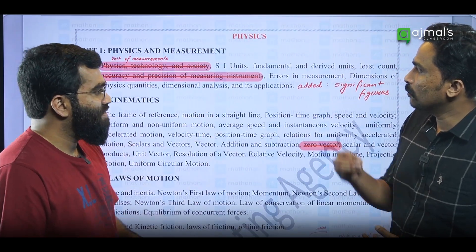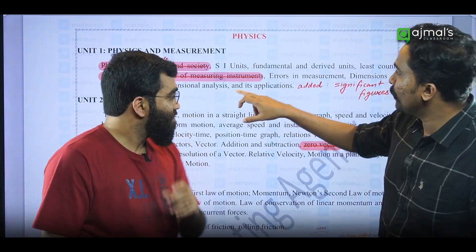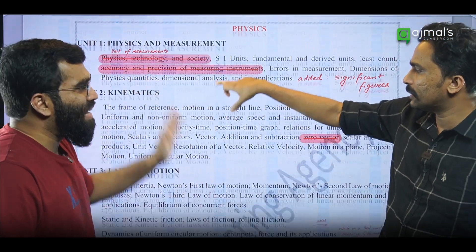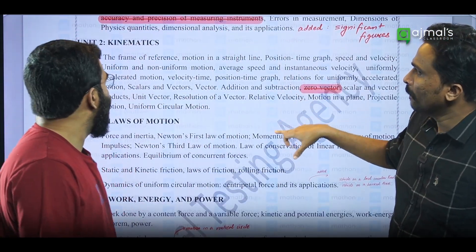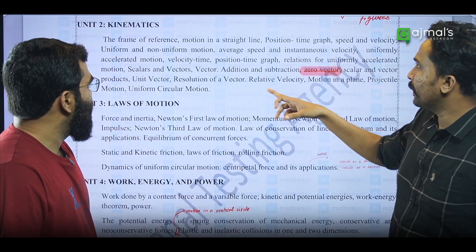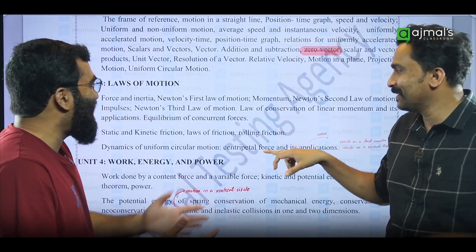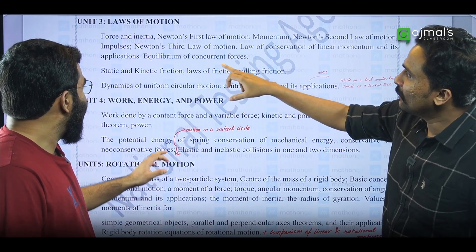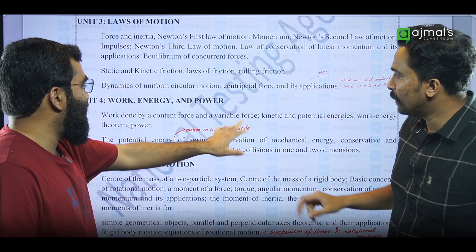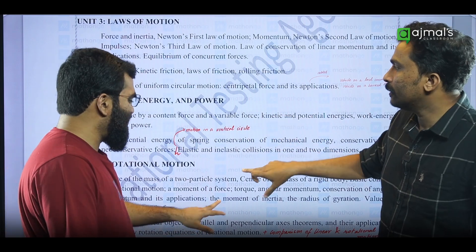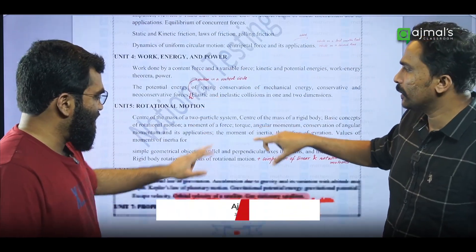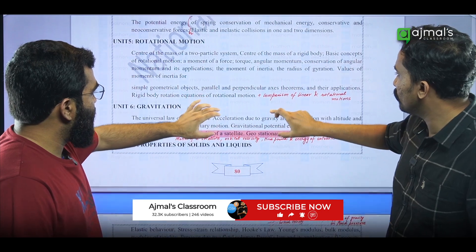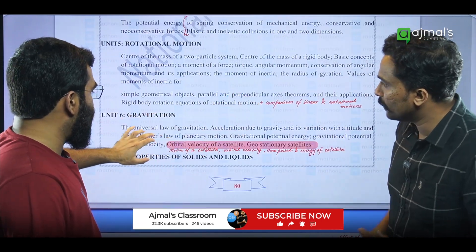If you want to talk about physics — in the first chapter, it's a little bit about physics. It's not about kinematics in the usual sense. It's not about zero. It's about work energy — it's a vertical circle. It's a rotational motion — it's a comparison of linear and rotational motion.